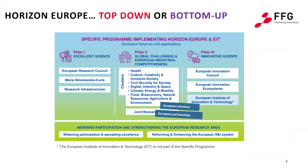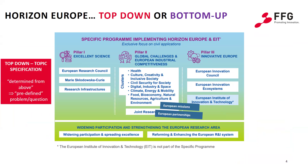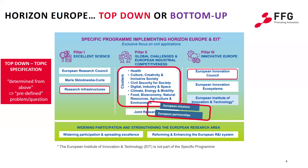An important distinction between the different programs is the different approaches between top-down or bottom-up. Top-down means that the topics are determined from above, in this case by the European Commission. As an applicant, you can only apply for specific call topics and must therefore first screen whether there are any suitable calls for proposals for your research area. Top-down calls are found primarily in pillar two, including in the missions and partnerships, but also partly in other pillars, for example in research infrastructures or the EIC Pathfinder.